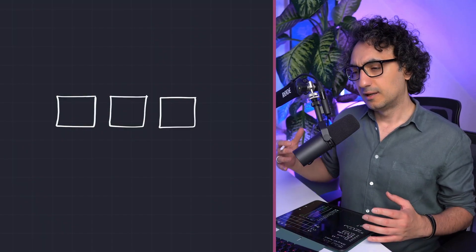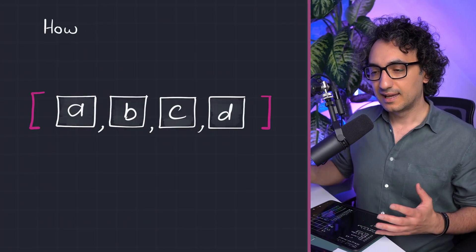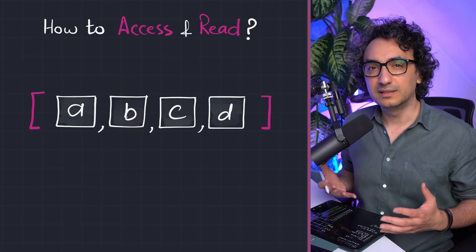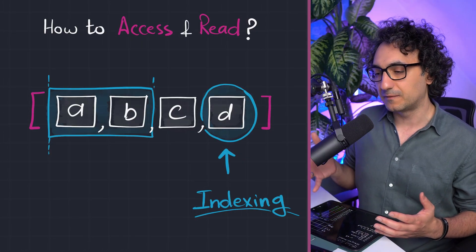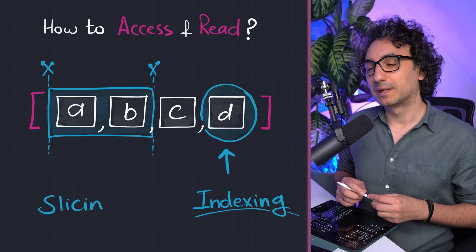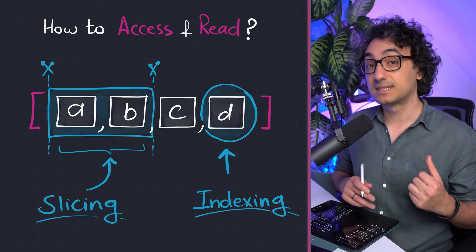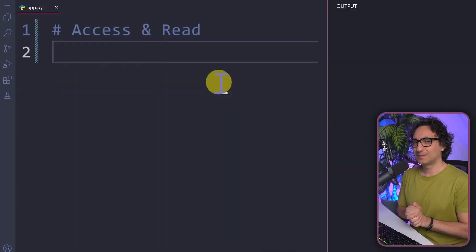Now that you have created a list, the next question is how to use it, how to read information from it, and how to access a specific value. We're going to talk about two very important concepts: indexing and slicing.